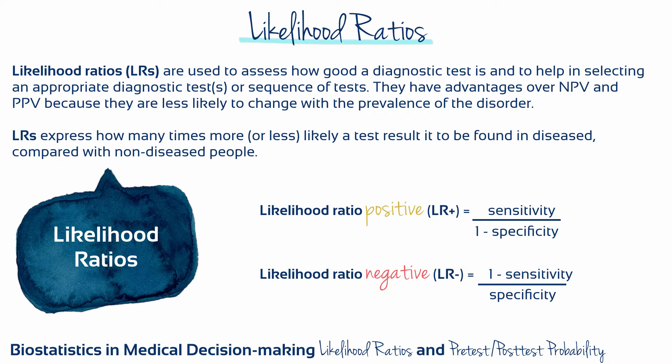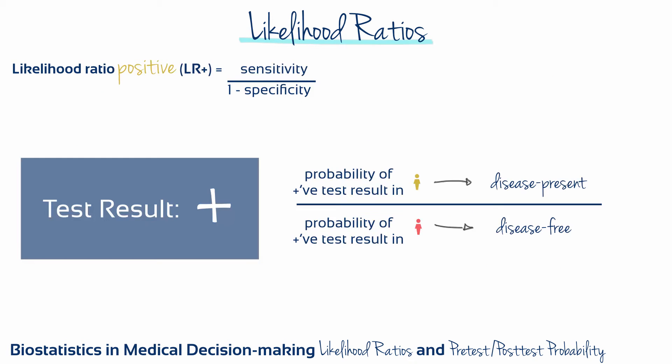Likelihood ratios come in two configurations: a positive likelihood ratio and a negative likelihood ratio. The positive likelihood ratio is the probability of obtaining a positive test result in a patient with the disease of interest divided by the probability of a positive test result for a person without the disease.